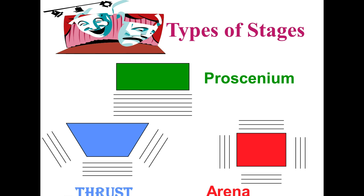The characteristics that we're using to define the differences between these stages are simply: one, where the audience sits, and two, where the actors perform and where the scenery is located.